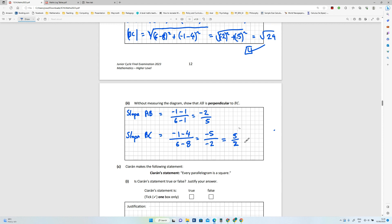So that is the reciprocal of that. So AB is perpendicular to BC. Okay, so you've proved this. So you flip it over and change the sign, and if that's the case, then they are perpendicular.